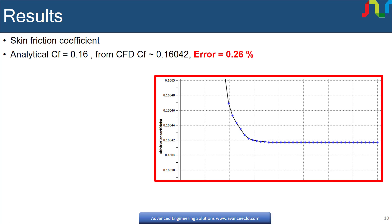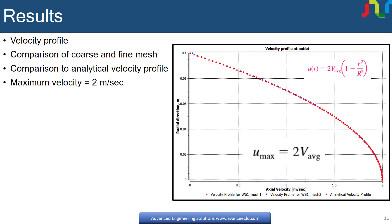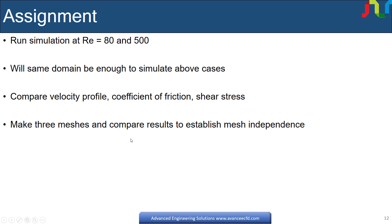Error is 0.26%. Here velocity profile is presented for two meshes and analytical formula. As expected, maximum velocity at center of pipe is 2 meters per second from CFD and compare very well with analytical value as expected.